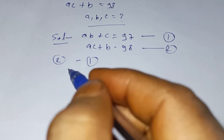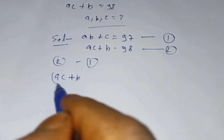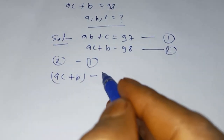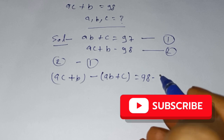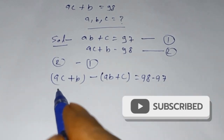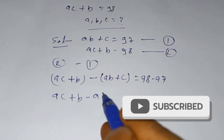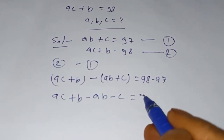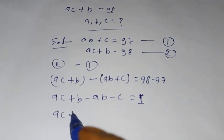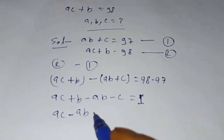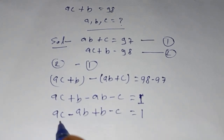Now subtract equation one from equation two: ac + b minus (ab + c) = 98 minus 97. This gives ac + b minus ab minus c = 1.